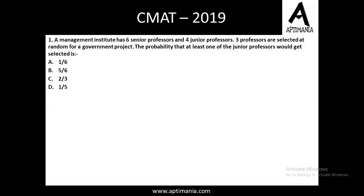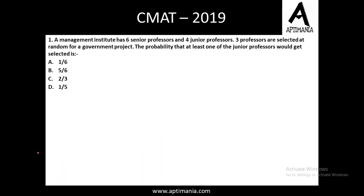Question number 1 is from probability. A Management Institute has 6 senior professors and 4 junior professors, so there are a total of 10 professors. 3 professors are selected at random for a government project. We need to find the probability that at least one of the junior professors would get selected, so we need to find favorable cases and total cases.